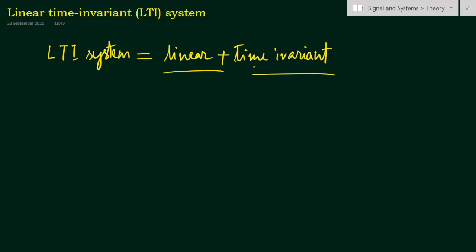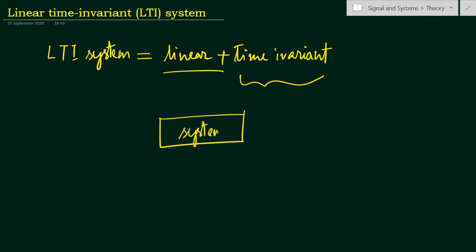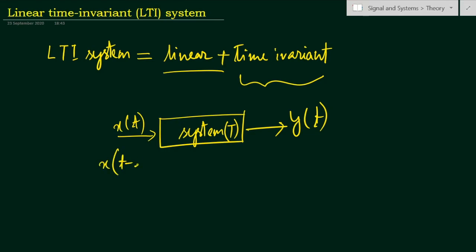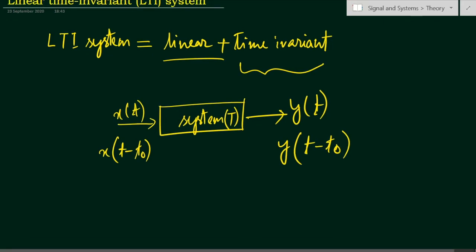We have already learned in our previous lectures about time invariant systems. I will explain briefly, since I have already made a video on time invariant systems. Suppose there is a system with transfer function T, input x(t), and output y(t). If any delay of t0 in the input produces the same delay t0 in the output — that is y(t - t0) — then it is called a time invariant system.